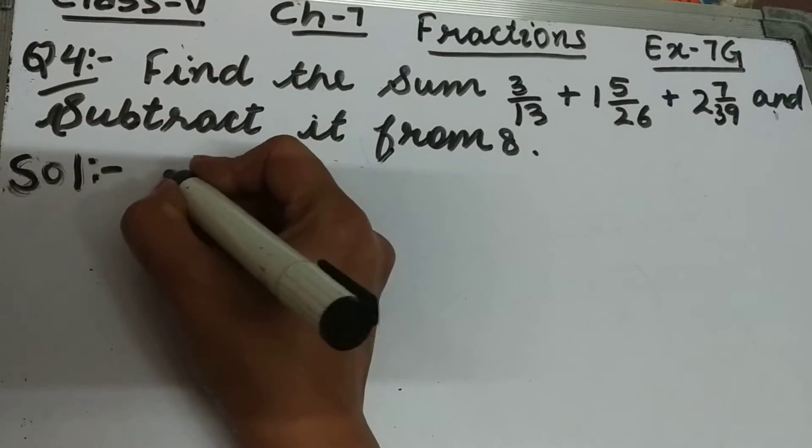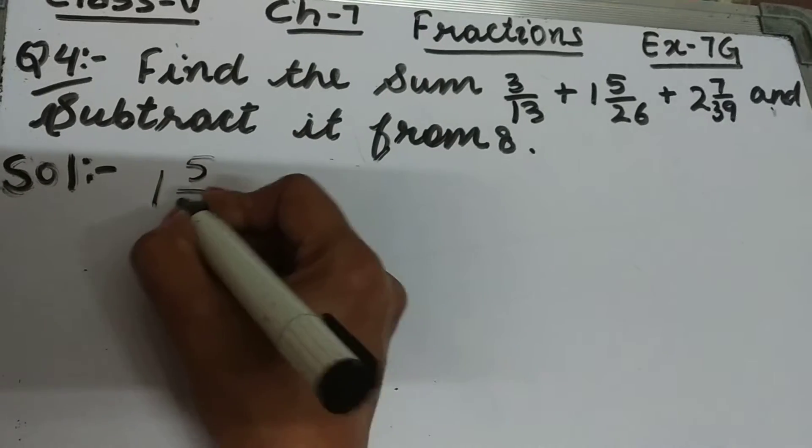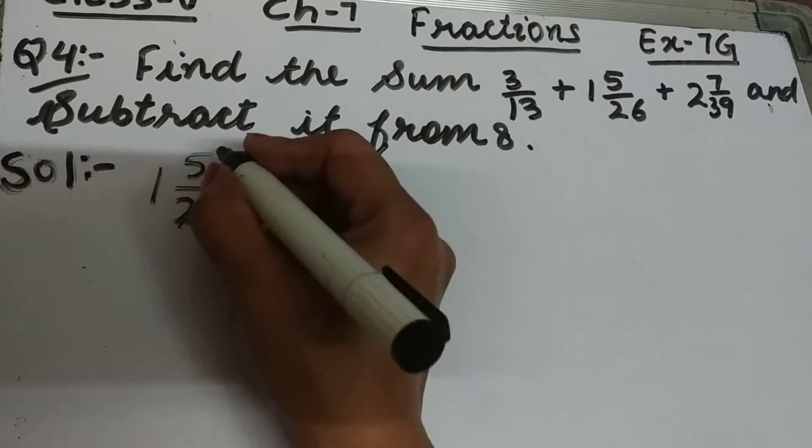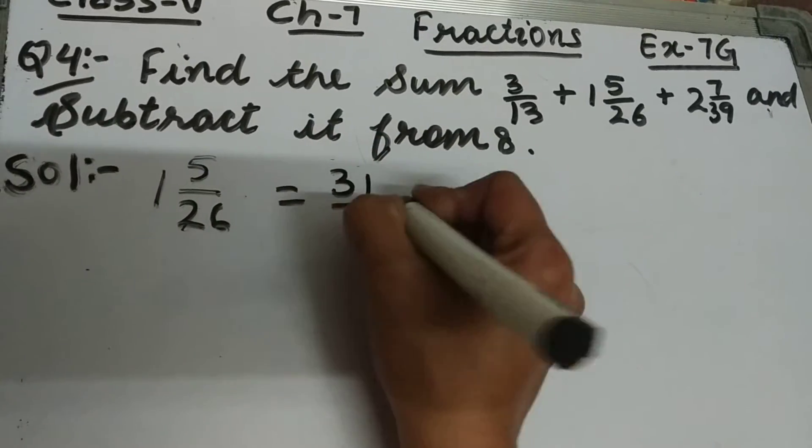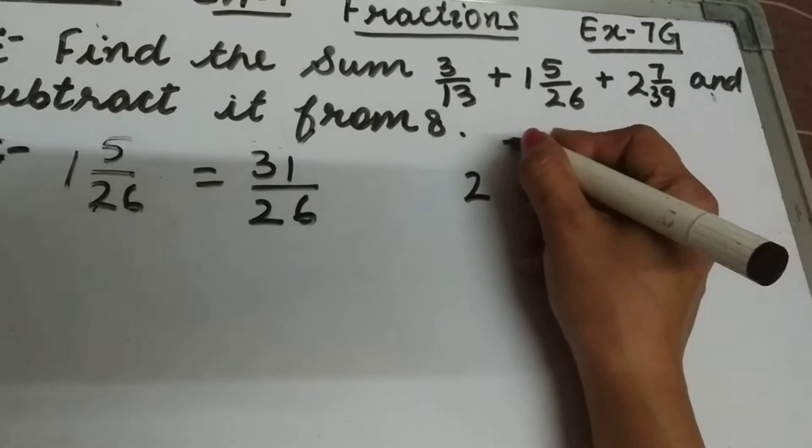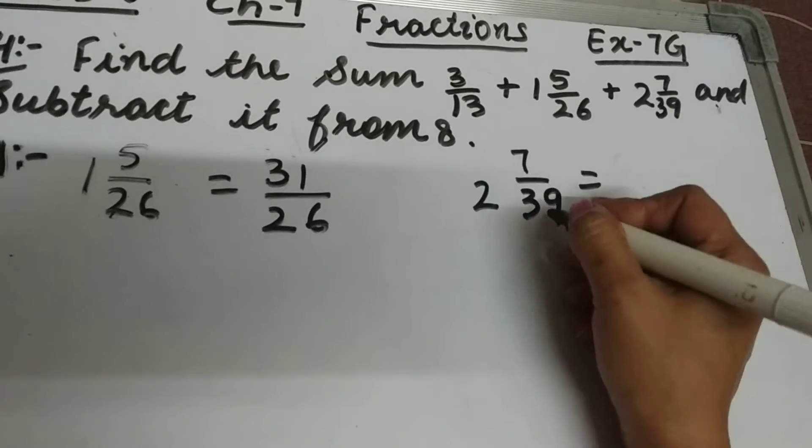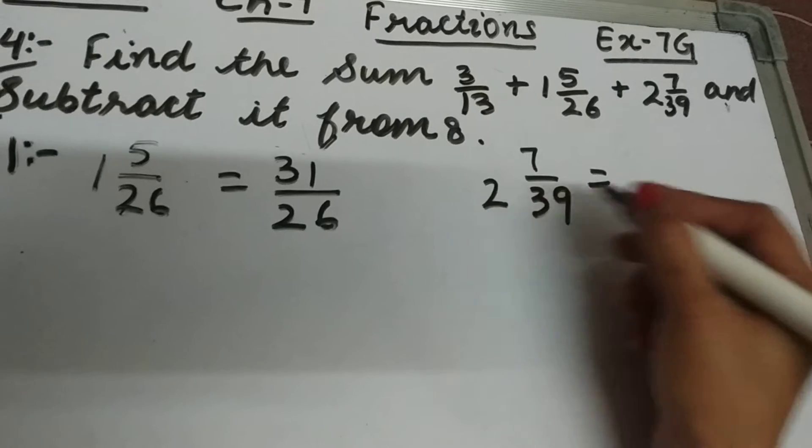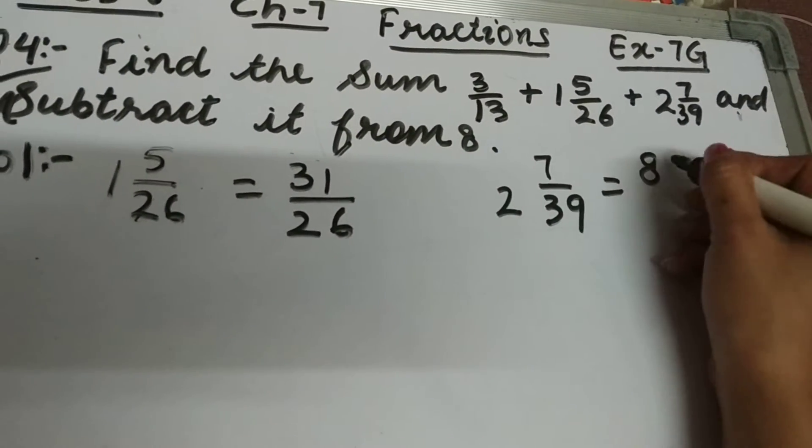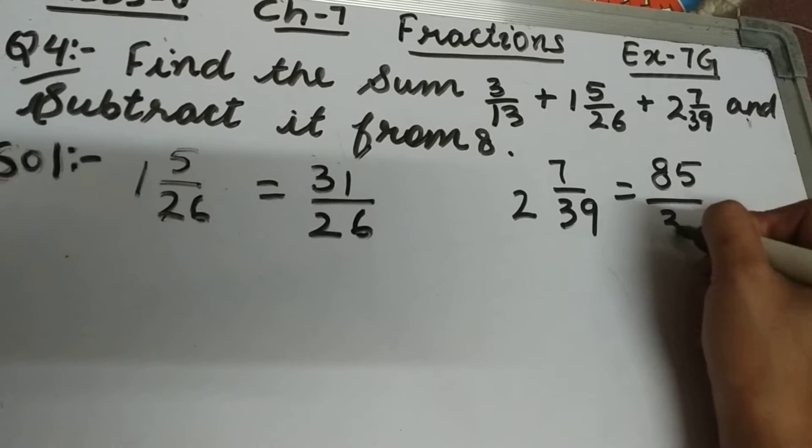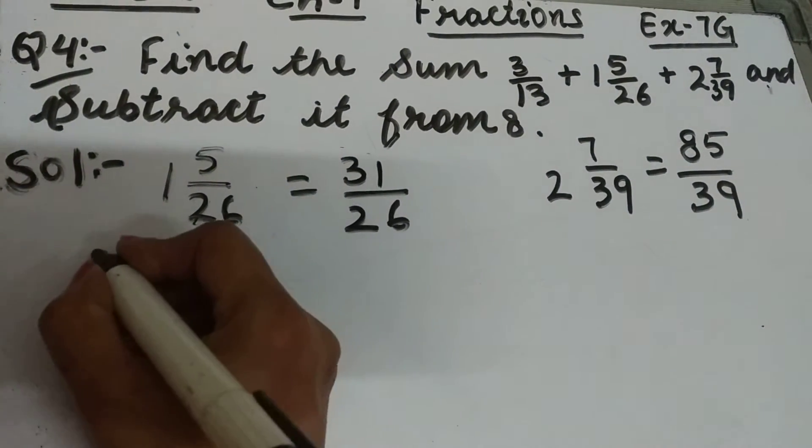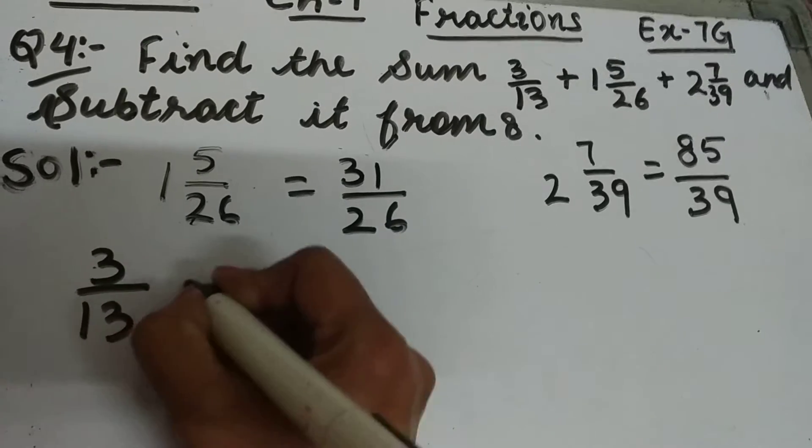1 5 upon 26 will become 26 ones are 26 plus 5 is 31, so this will be 31 upon 26. And 2 7 upon 39 will be 39 twos are 78, and 78 plus 7 is 85, so this will be 85 upon 39. Now our question is 3 upon 13 plus 31 upon 26 plus 85 upon 39.